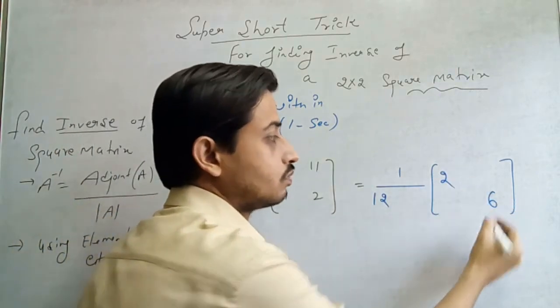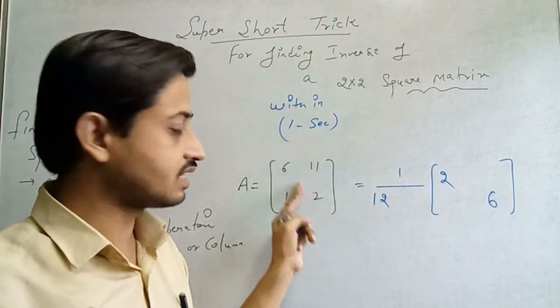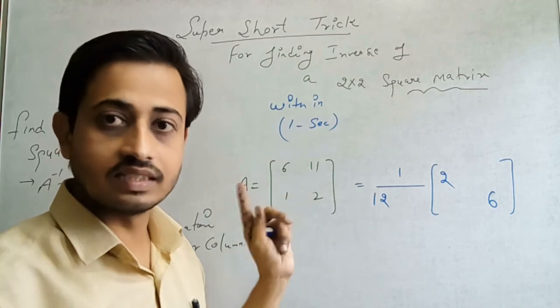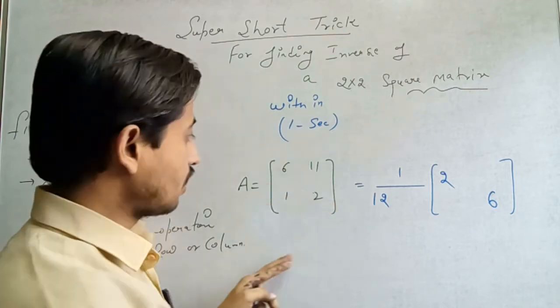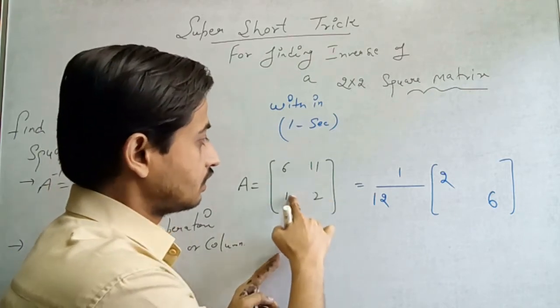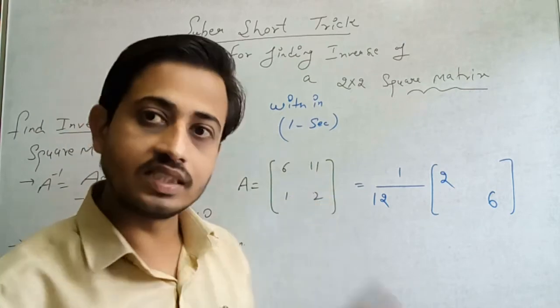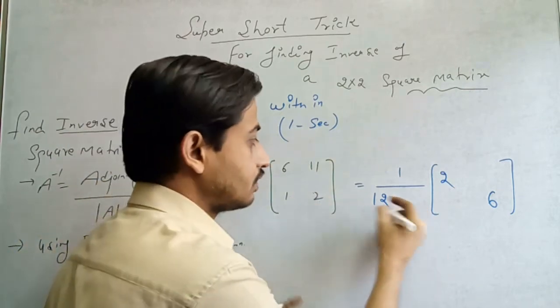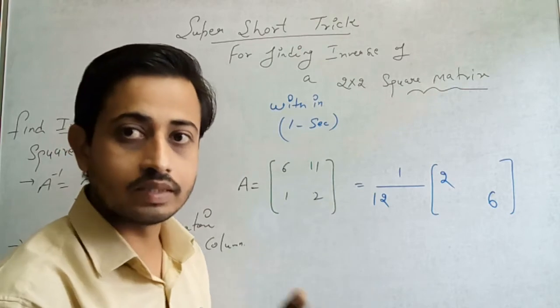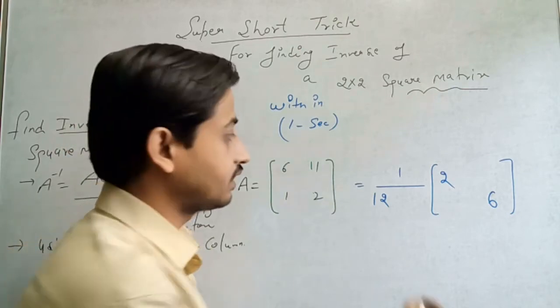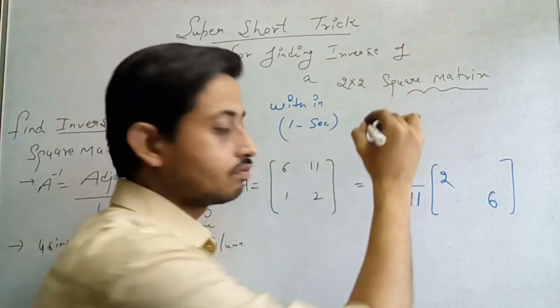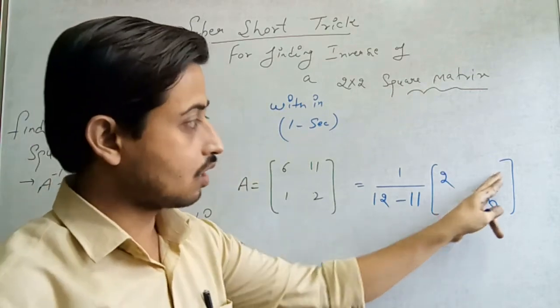We get 2, 6. We interchange these elements, the forward diagonals. Then, the second step is you have to multiply 11 into 1, which is 11, and change the sign. 11 into 1 is positive 11. It means we have to change the sign. We get negative 11.